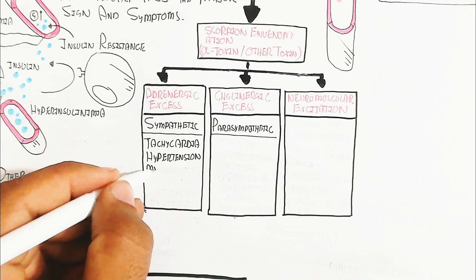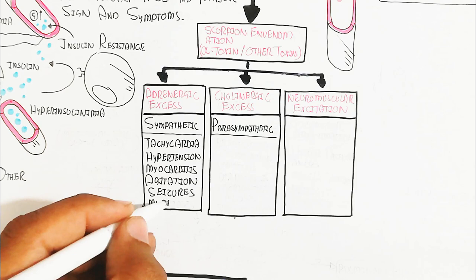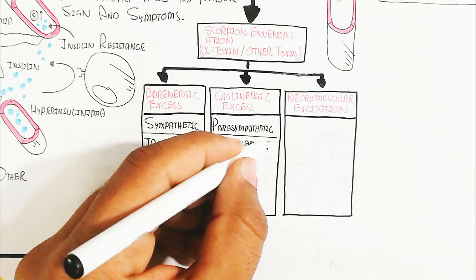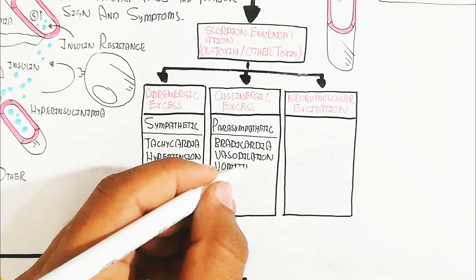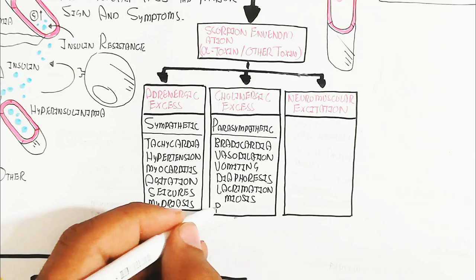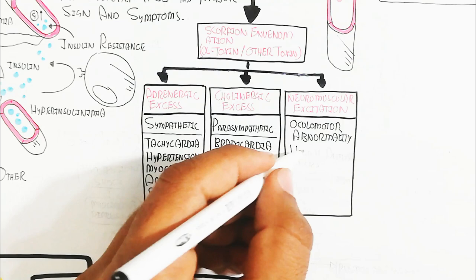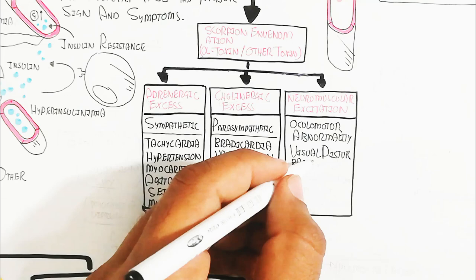For the parasympathetic nervous system, cholinergic neurotransmitter excess leads to bradycardia, vasodilation, vomiting, diaphoresis, lacrimation, miosis, bronchospasm, and bronchial secretion. The secretion and lacrimation are due to parasympathetic — rest and digest — activation. Neuromuscular excitation also leads to dizziness and oculomotor abnormality.